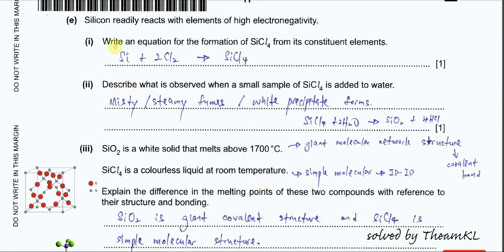Part E. Silicon readily reacts with elements of high electronegativity such as chlorine. Part one: write an equation for the formation of SiCl₄ from its constituent elements. We start with silicon and chlorine gas. When silicon reacts with chlorine it forms SiCl₄ — silicon tetrachloride — which is a liquid.